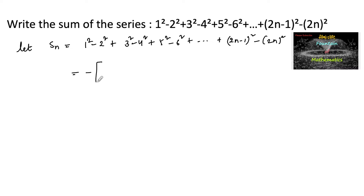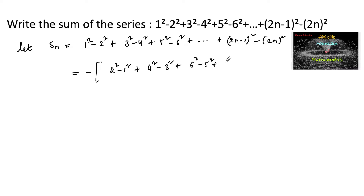By taking minus common, we can write: minus of (2² - 1² + 4² - 3² + 6² - 5² + ... + (2n)² - (2n-1)²).